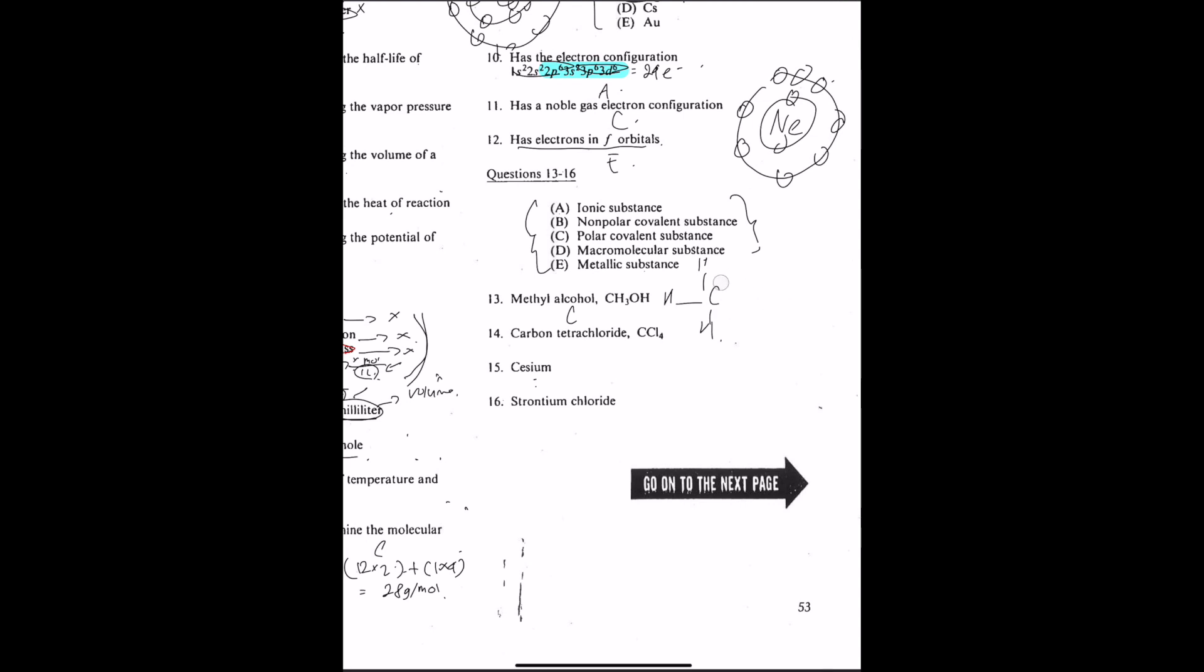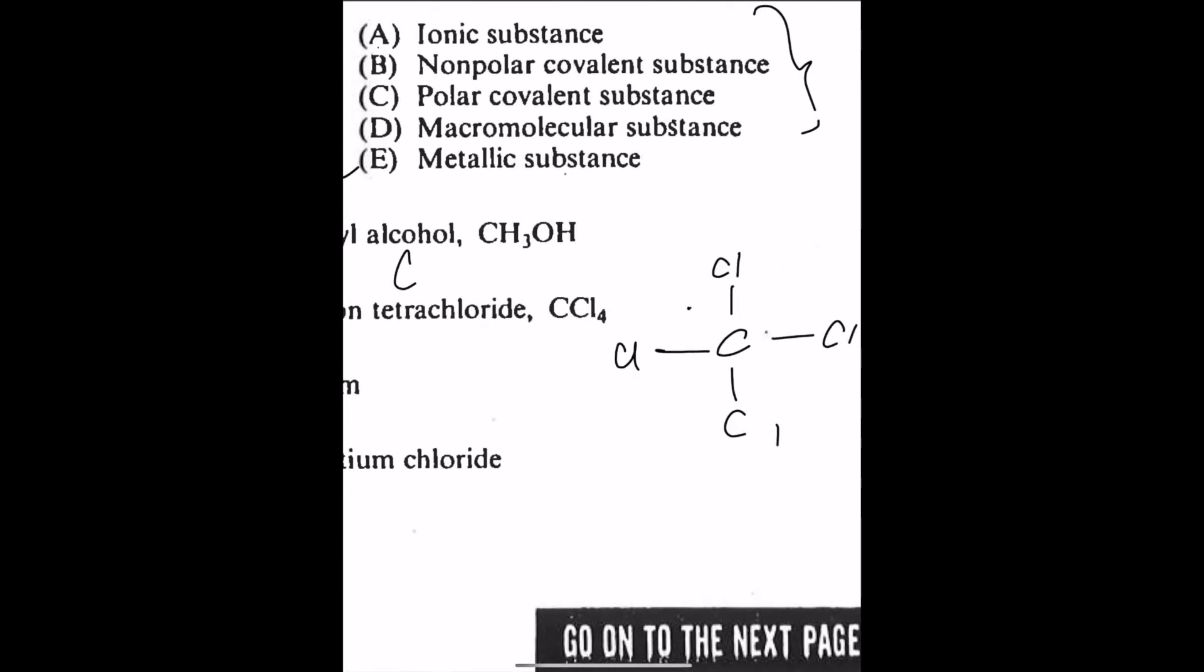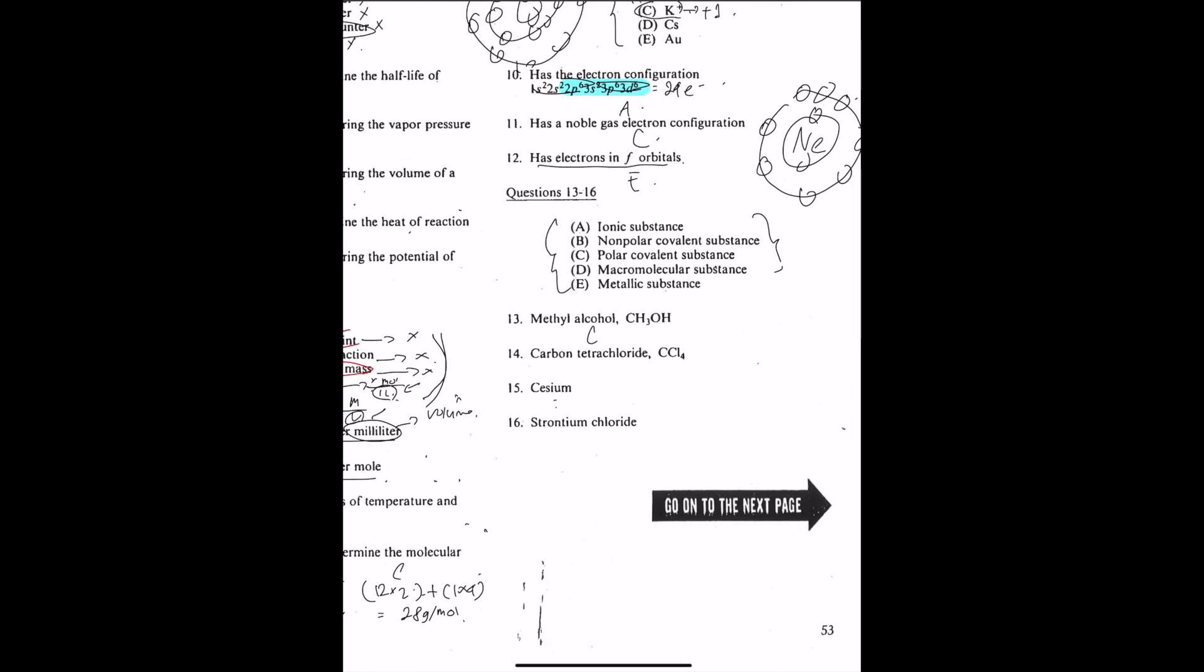Number 14, carbon tetrachloride. If you draw its structure, it looks like this. Although the carbon-chloride bond is polar, it has four bonds, four symmetrical bonds. Although they are polar because they have two symmetrical, or rather two bonds in the opposite direction, they cancel each other. Hence, it is a non-polar covalent bond. It also has a tetrahedral structure. Molecules with tetrahedral structure, they're all non-polar covalent. So it should be non-polar covalent.